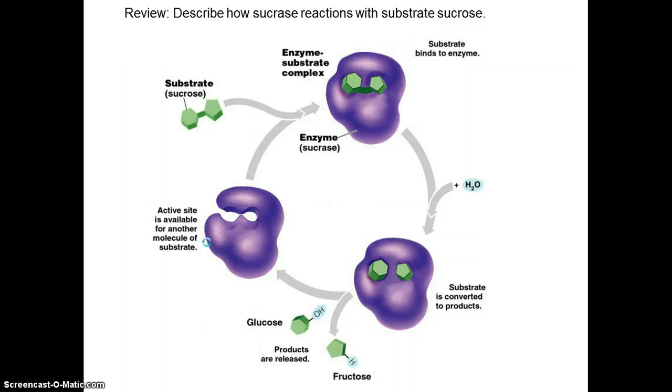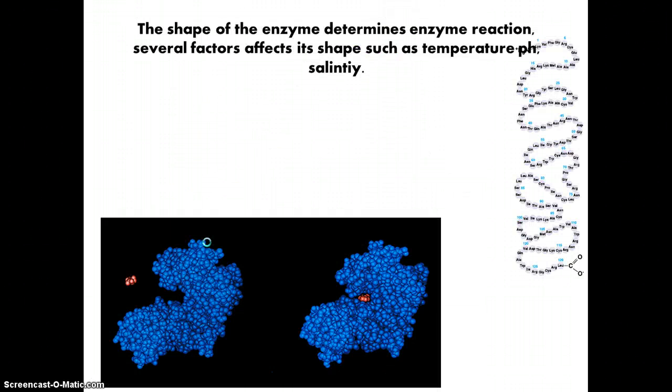So review and describe how sucrase reactions occur with the substrate sucrose. So remember, you have an enzyme which has a particular active site. And at this active site, only substrate sucrose can bind to it. Once the sucrose binds to it, we call it enzyme substrate complex. And once a reaction happens, in this case, adding water, hydrolysis occurs, breaking the bond, and forming two products.